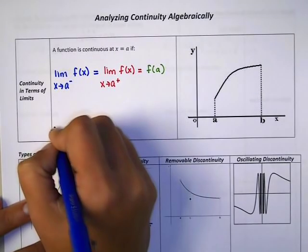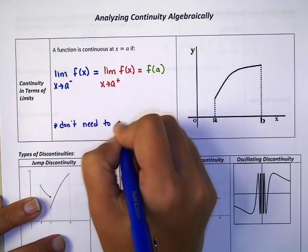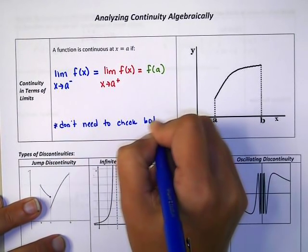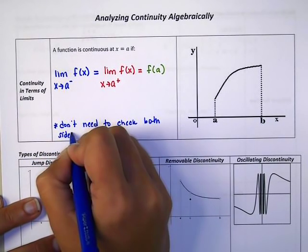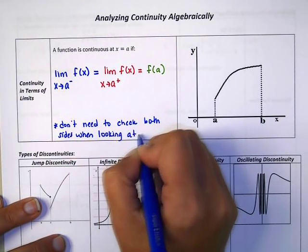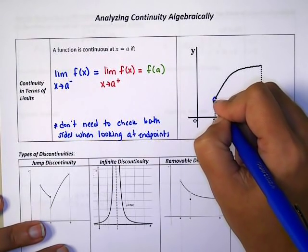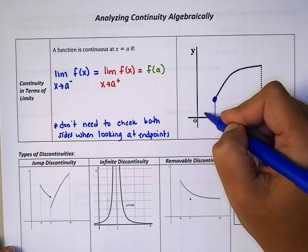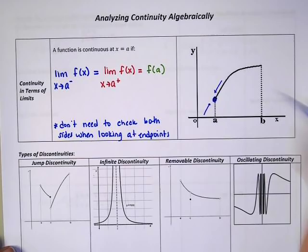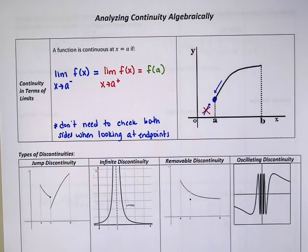The only time we don't need to check all of these is at endpoints — we don't need to check both sides. For example, if I wanted to know if this graph was continuous at an endpoint, I wouldn't check the limit from the left because there is no graph over there. I would only need the right-sided limit, and vice versa for the other endpoint — only check the side connected to the graph.